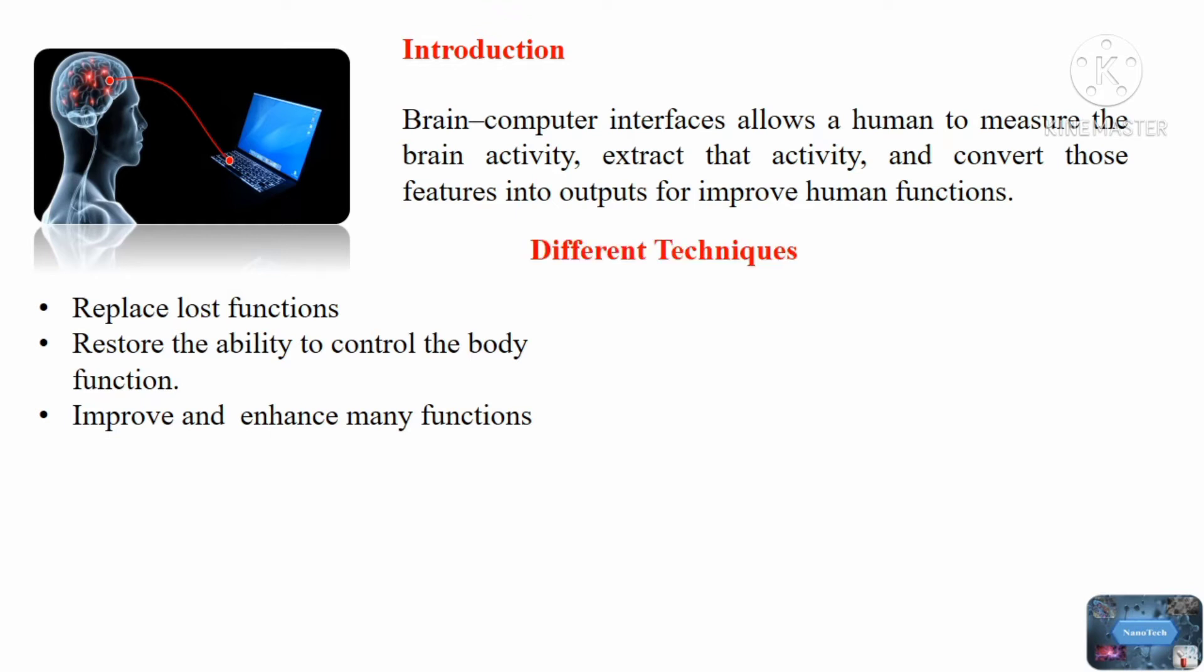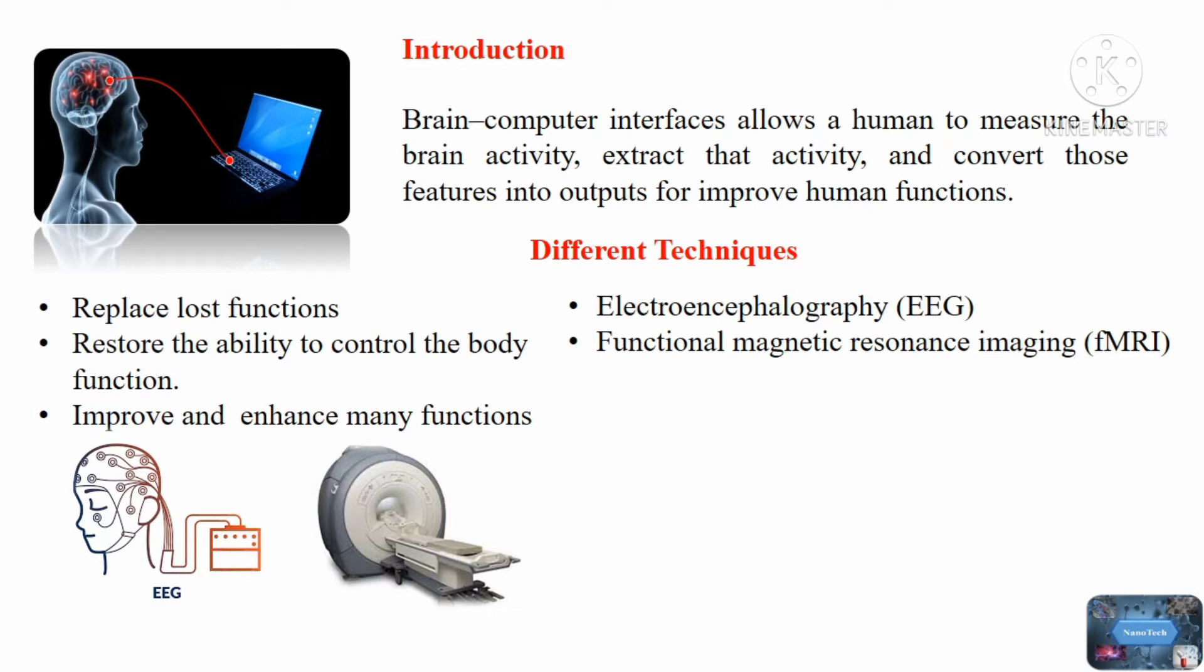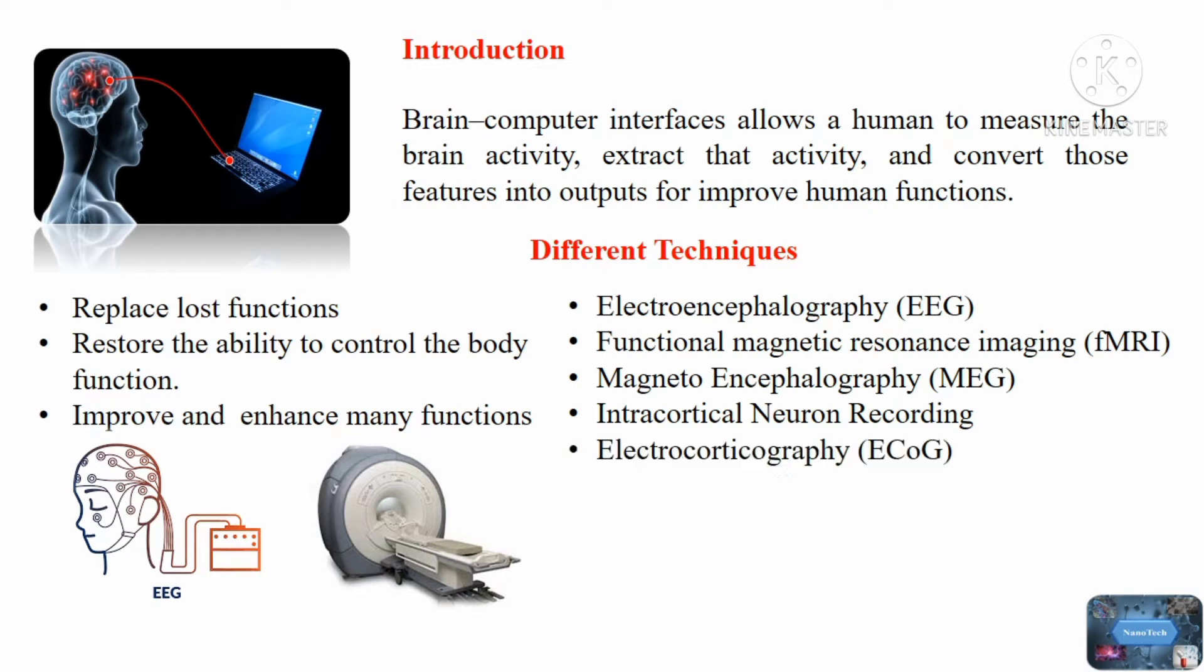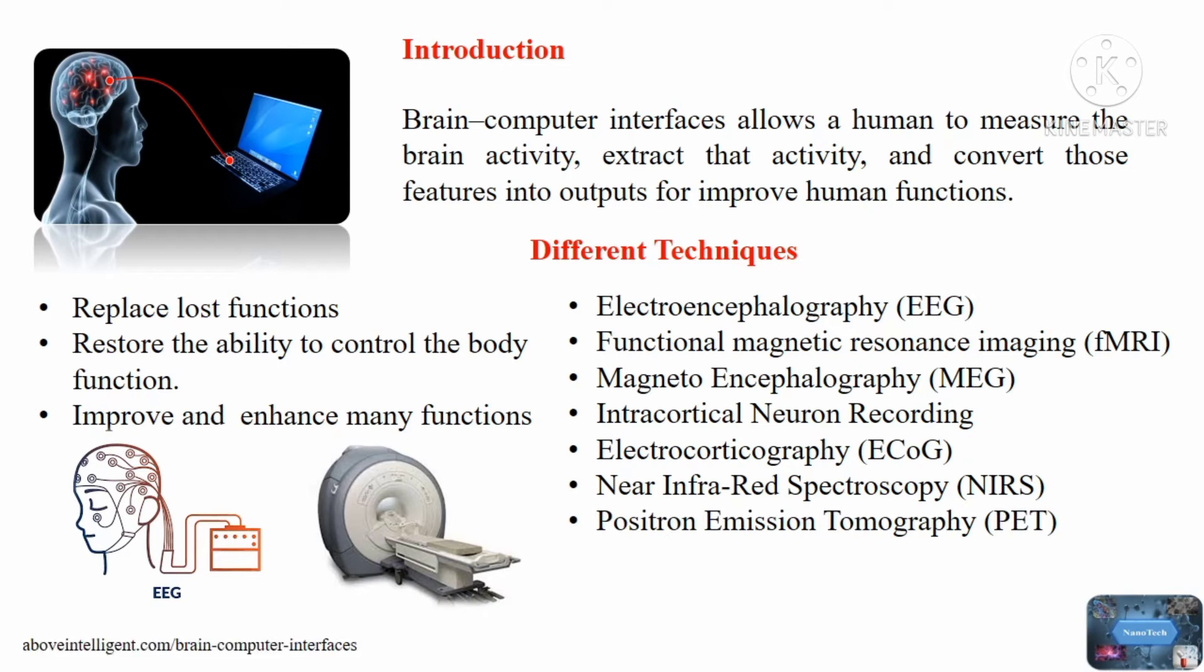Brain-Computer Interface utilizes many techniques for measuring the brain activity, such as electroencephalography (EEG), functional magnetic resonance imaging (fMRI), magnetoencephalography (MEG), intracortical neuron recording, electrocorticography (ECoG), near-infrared spectroscopy (NIRS), and positron emission tomography (PET).